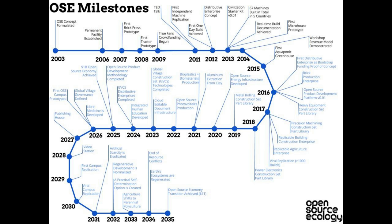Lots of different machines were built. The first one-day build was achieved in 2012, building the brick press in a very long single day, but we showed that we can manufacture machines on a very rapid timescale. That's when we also published the Distributive Enterprise concept, which is what I'll be focusing on right now.